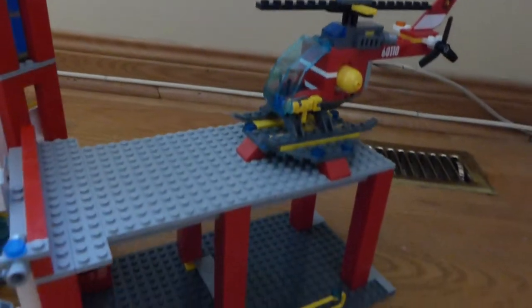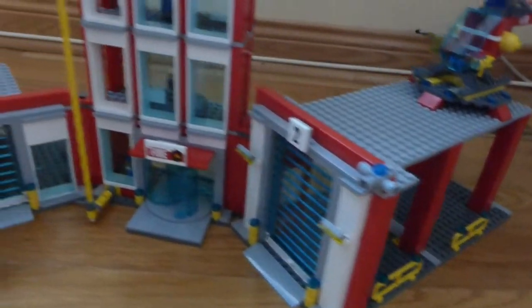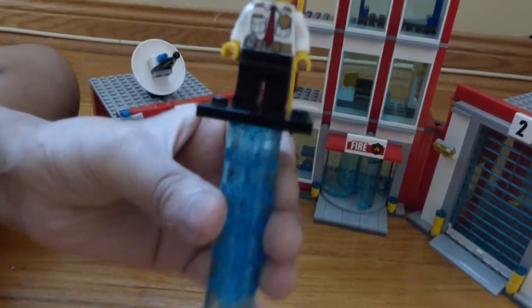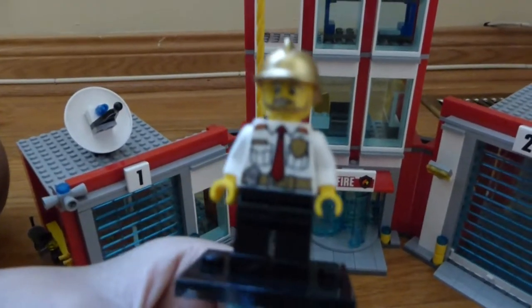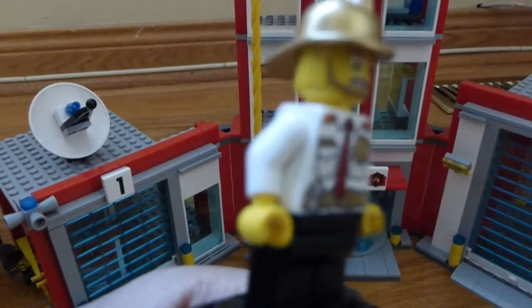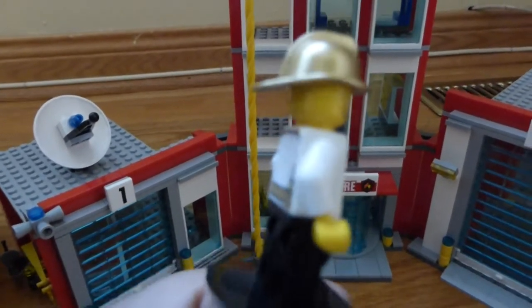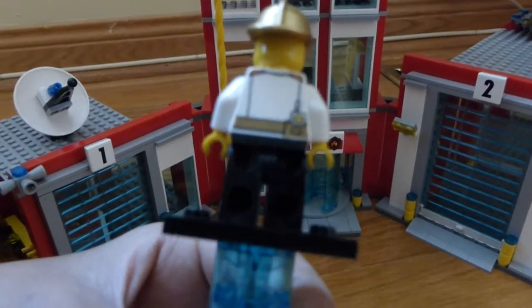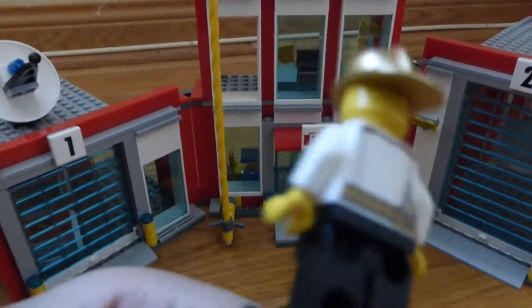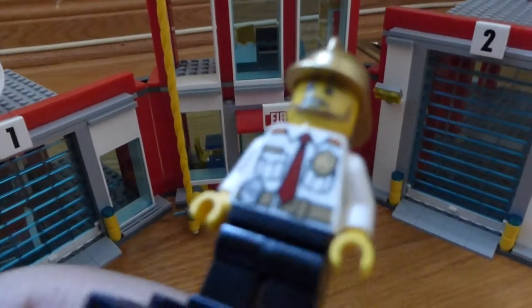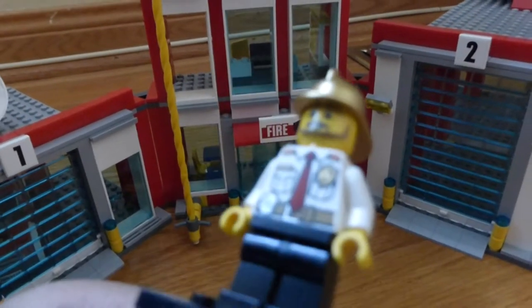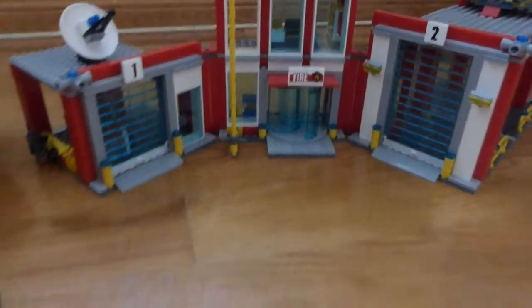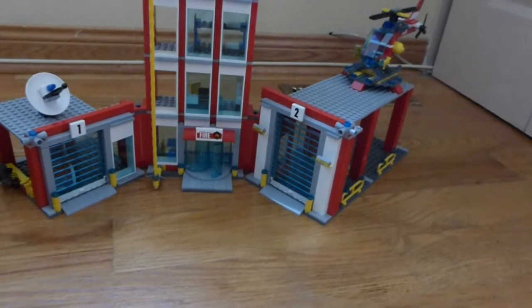Now let's look at the minifigures. Let's start with the captain. The captain has a golden helmet and a pretty good torso. He's got a radio on his back and a pretty good torso.